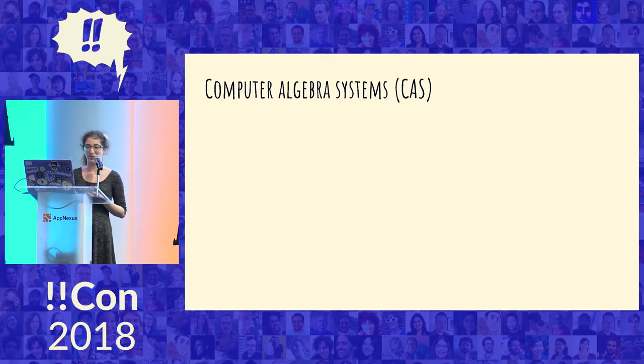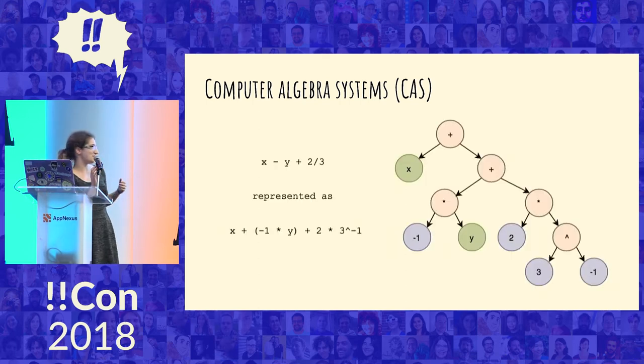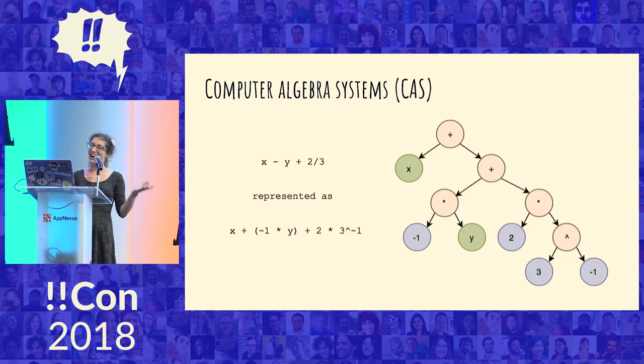And then I looked at their parse tree, and it looked like this. So like x minus y plus two-thirds was then x plus minus one times y plus two times three to the minus one, which is, yeah, the same kind of thing, but also not.